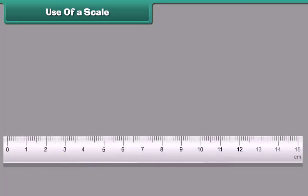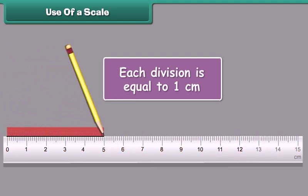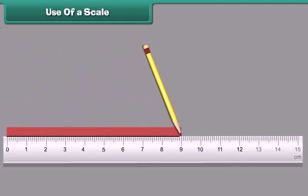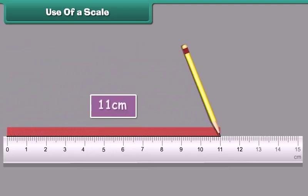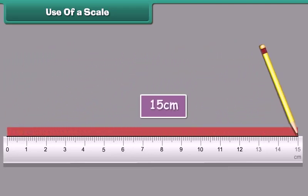Look at this ruler. Its markings show many divisions. Each division is equal to one centimeter. The numbers are written from 0 to 15. From 0 to 5, we get 5 centimeters. From 0 to 11, we get 11 centimeters. From 0 to 15, we get 15 centimeters.